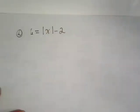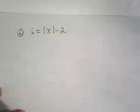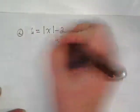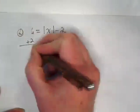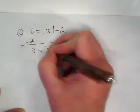X minus 2. This one is a relatively simple one. What are we going to do with it first? Add 2. 8 is equal to the absolute value of X.